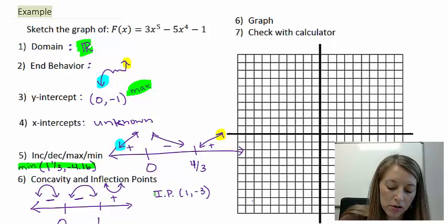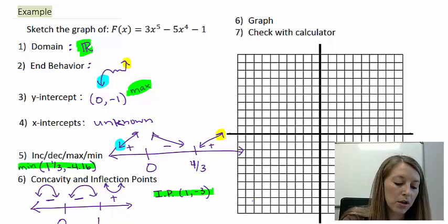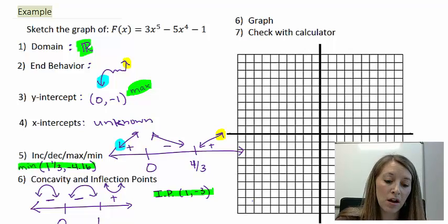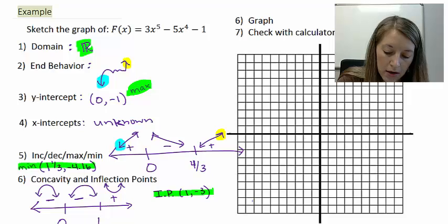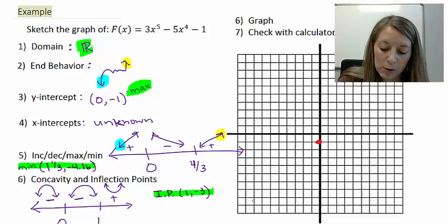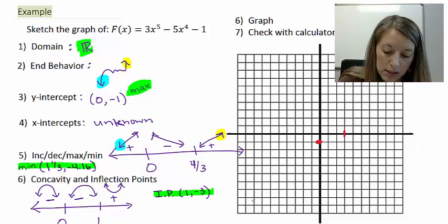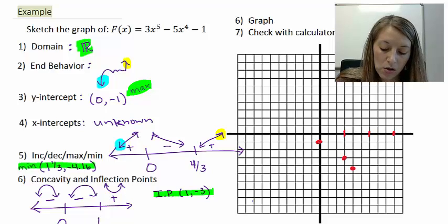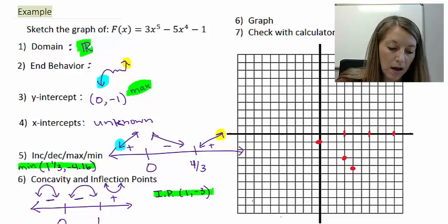The inflection point at one, negative three. So let me draw all the points on the graph first and then I'll fill it in with the increasing, decreasing, and the concavity. So I have a y-intercept at zero, negative one. And let me go ahead and do my tick marks by a little bit more expanded, so let me just say this is one, two, three. So this is one and one-third and then negative four. I'll keep my y values the same, so there is my minimum value. I have an inflection point at one, negative three, so there's an inflection point. So those are all of my points.